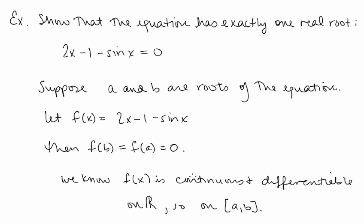Let's take a look at this example: show that the equation 2x − 1 − sin(x) = 0 has exactly one real root. It's not immediately clear we'll use the Mean Value Theorem, and this is an advanced problem. Typically in mathematics, when we want to show that an equation has exactly one of something, we start by saying 'suppose there are two' and find a contradiction. So we say: suppose a and b are roots of the equation, and we'll do math to find a contradiction.